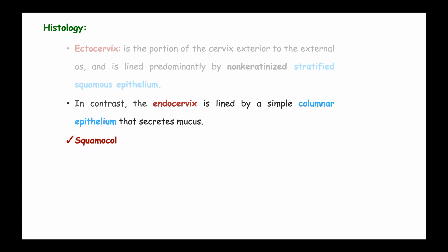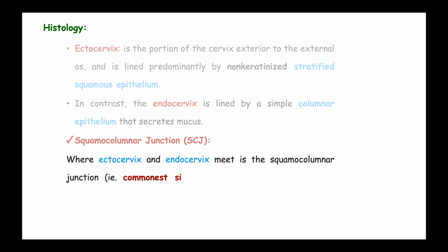When we say squamous columnar junction, it is where the ectocervix and the endocervix meet. The junction where they meet is what we call the squamous columnar junction, and it is the most common site for human papillomavirus infection and cervical cancer.